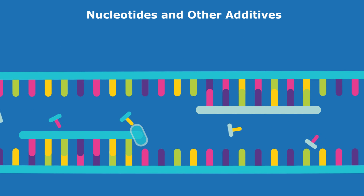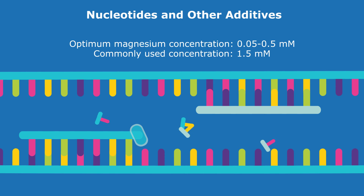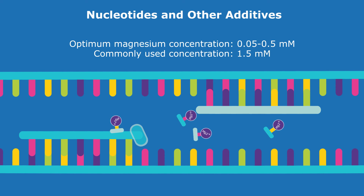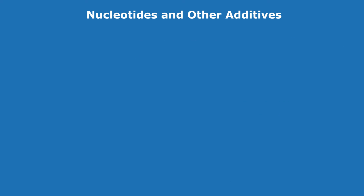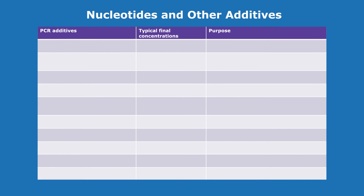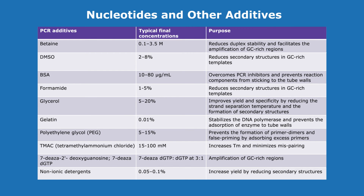Another factor to consider is the magnesium ion concentration in the reaction mixture, as magnesium ions bind dNTPs and reduce their availability. Scientists may add other optional additives to overcome complex secondary structures and nonspecific priming to enhance PCR efficiency and specificity. Depending on your assay conditions, choose the right kind of PCR additive from the table to boost your PCR.